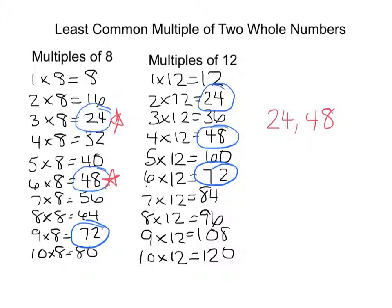Now we're going to be looking for this least common multiple, which means the smallest. So what do you think is going to be the least common multiple between 8 and 12?